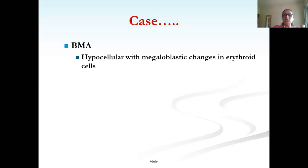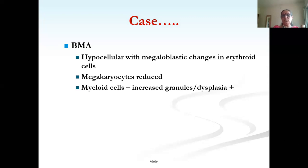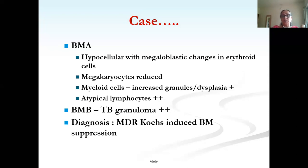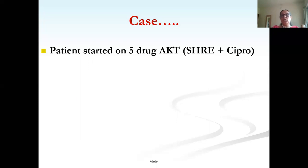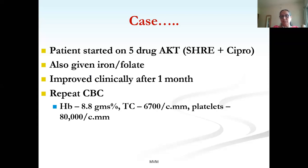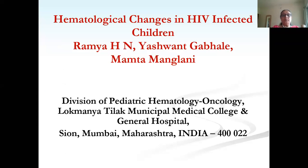CBC: Hb 5.8 g%, WBC 2200, platelets 19,000, MCV 81, RDW elevated. Low MPV, low retic — indicating marrow involvement. HIV was negative. Lymph node biopsy showed acid-fast bacilli with MTB complex isolated. Bone marrow aspirate: hypocellular marrow with megaloblastic changes in erythroid cells, reduced megakaryocytes, myeloid dysplasia with increased granules, and TB granuloma on biopsy. Diagnosis: MDR TB-induced bone marrow suppression. Started on five-drug AKT protocol plus iron and folate.